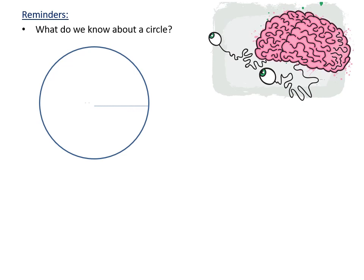A circle has a center and a radius. Its notation is C(O, R), which means C is the name of the circle, O is the center, and R is the radius. For example, C(O, 3) means a circle C of center O and radius 3 centimeters.